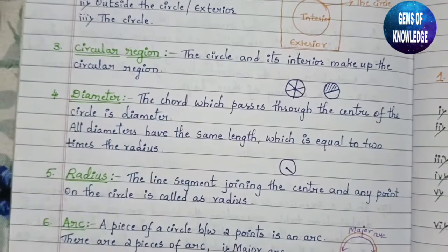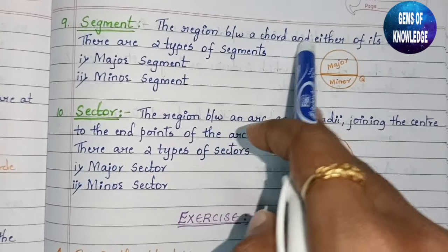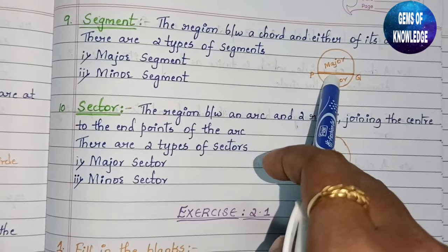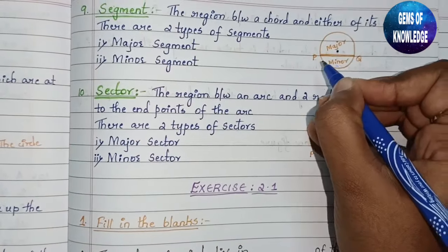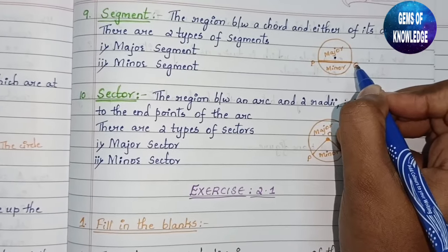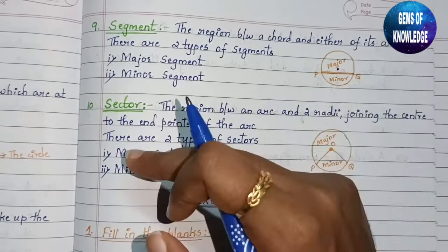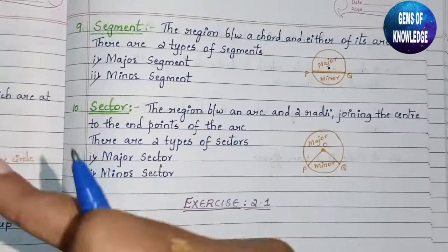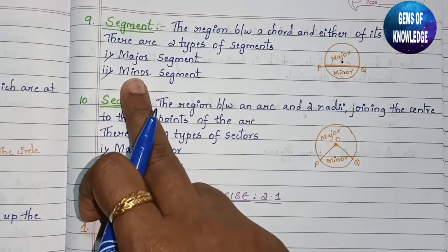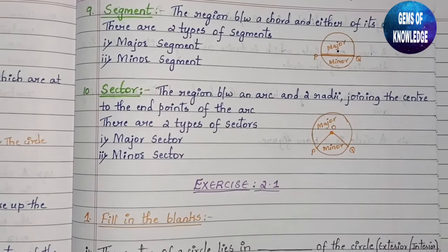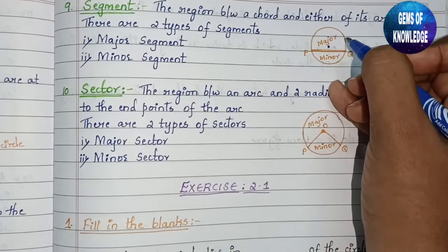You can see this is a semicircle — both the upper part and the lower part are semicircular regions. Next is segment: the region between a chord and either of its arcs. PQ is a chord. The line joining two points on the circle is called a chord; if it passes through the center it is the diameter. There are two segments: major segment and minor segment.